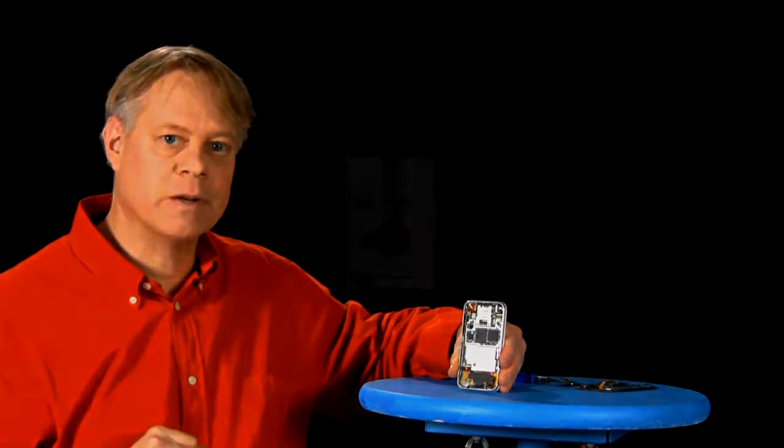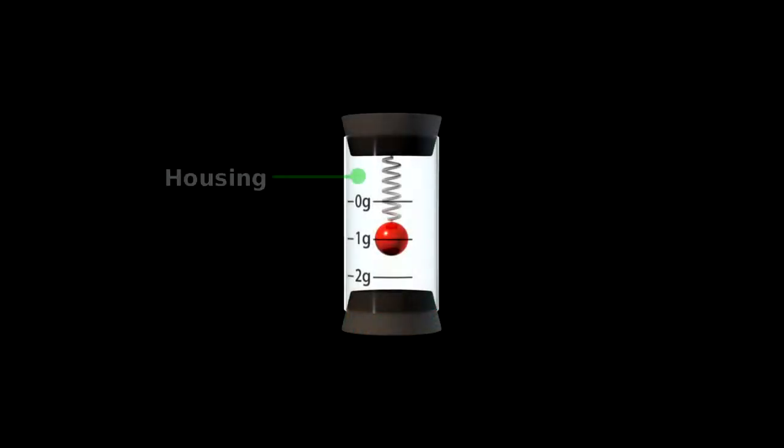But first, some basics of accelerometers. They have two fundamental parts: a housing attached to the object whose acceleration we want to measure, and a mass that, while tethered to the housing, can still move. Here it's a spring with a heavy metal ball.